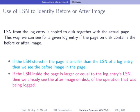How do you know, when coming to a certain log entry and looking at the corresponding page on disk, whether you're looking at the old version or the new version — that is, A or A-prime? You can call A the before image and A-prime the after image. You determine this simply by looking at the log entry for that operation and comparing it to the page log sequence number.